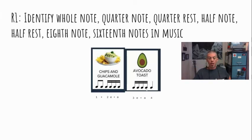Finally, we have two eighth notes for one-and, four sixteenth notes, two-e-and-a, four sixteenth notes, three-e-and-a, and a quarter note for beat four. Here we go. One and two-e-and-a, three-e-and-a, four. Chips and guacamole avocado toast. One and two-e-and-a, three-e-and-a, four. Chips and guacamole avocado toast. There you go.